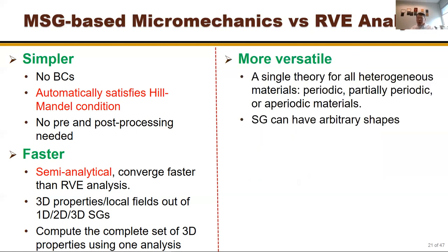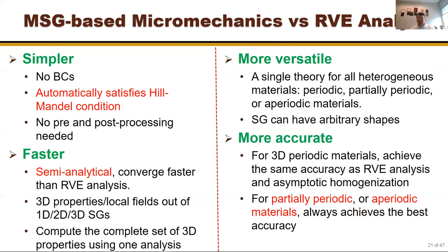MSG is also more versatile — it's a single theory for all heterogeneous materials, whether periodic, partially periodic, or aperiodic. The geometry can be arbitrary; it doesn't have to be a cuboid or rectangular shape. For 3D periodic materials it achieves the same accuracy as RVE analysis, and for partially periodic and aperiodic materials it always achieves the best possible accuracy.